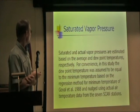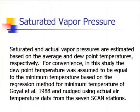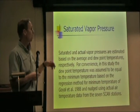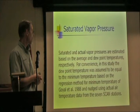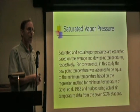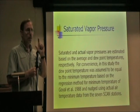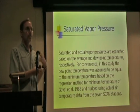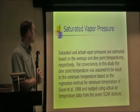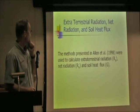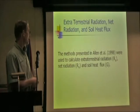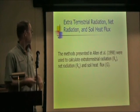Saturated vapor pressure can be estimated from minimum temperature, and since we have minimum temperature data across the island, we used that. What we actually want is the dew point temperature in order to get the actual vapor pressure. We can estimate that from the minimum daily temperature, and we simply made the assumption that was acceptable for this study. There were also other parameters — extraterrestrial radiation needed for estimating net radiation, and soil heat flux — using estimation procedures from Allen et al. 1998, which is the FAO document.